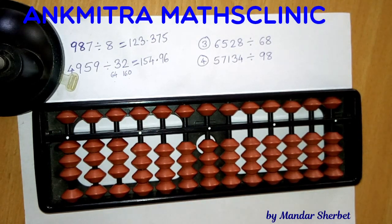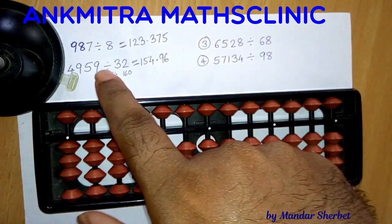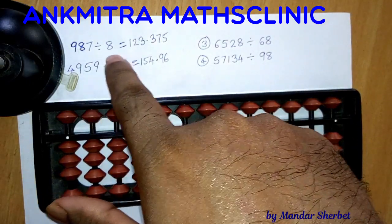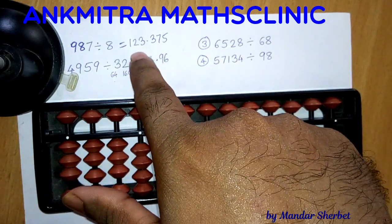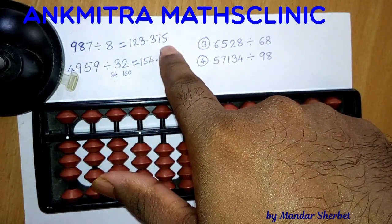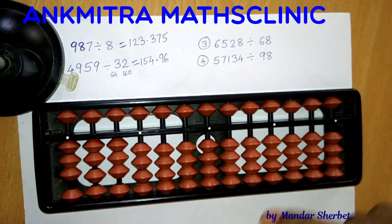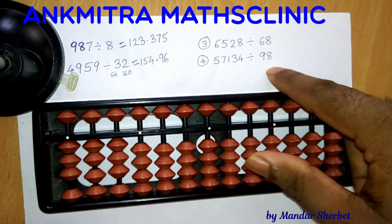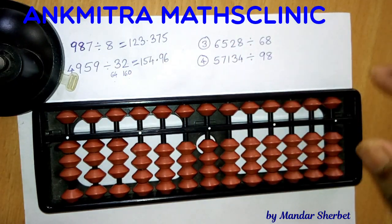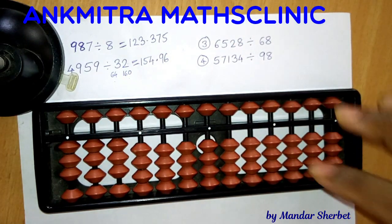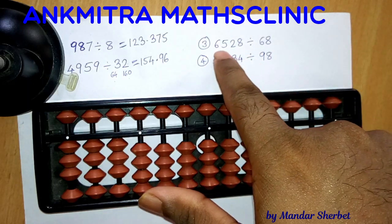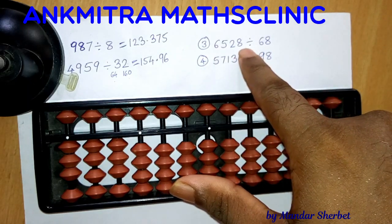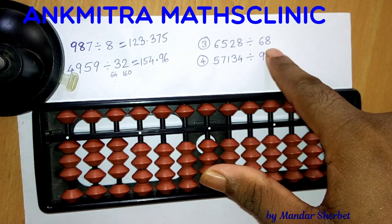Hello everyone. As I mentioned in the previous video, where we saw how to divide numbers with one-digit or two-digit divisors and end up with an answer in decimal number, I mentioned that I will be solving these two examples in the next video. So here I am, where I will be solving this example — a four-digit number divided by a two-digit number.